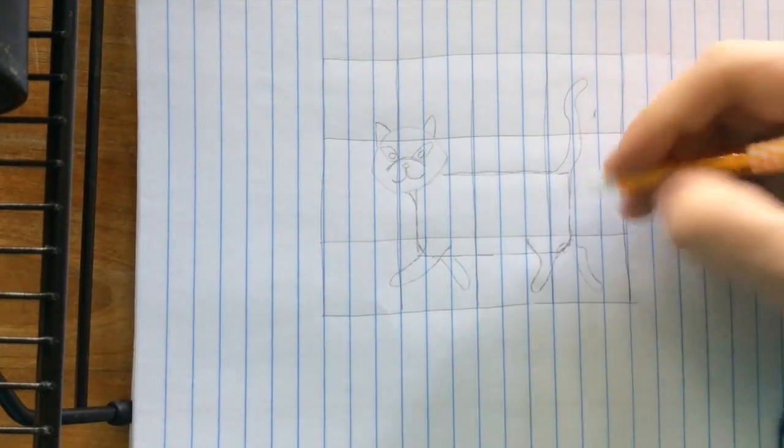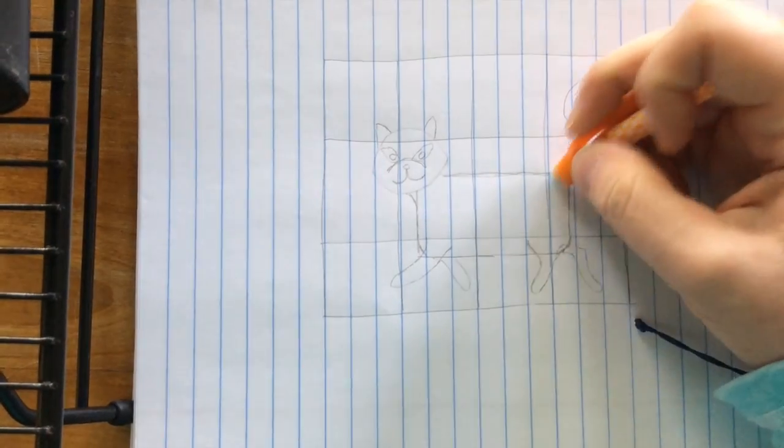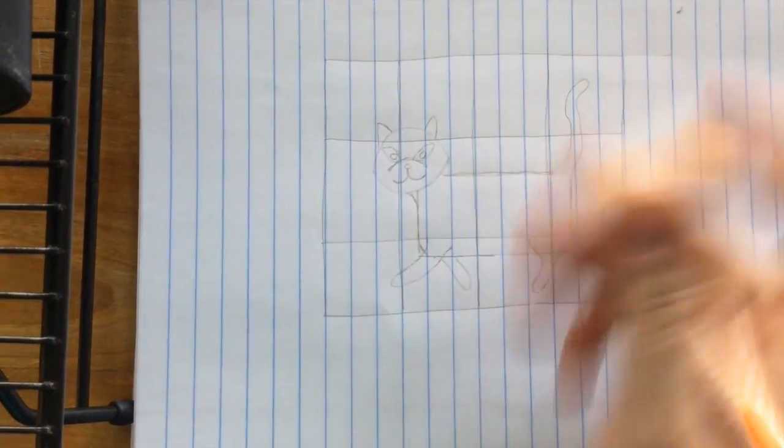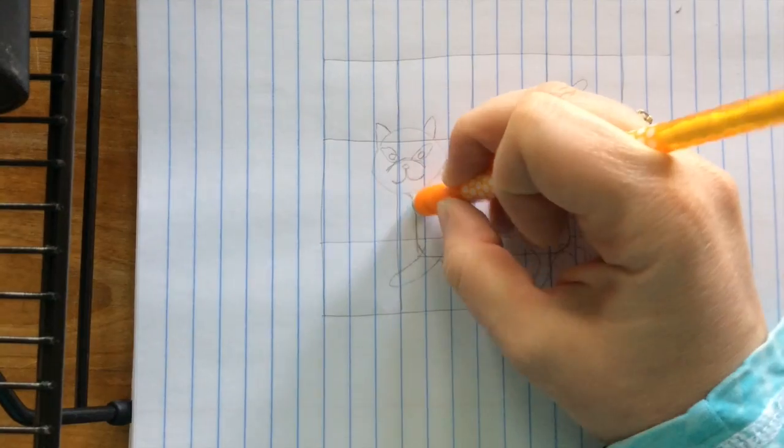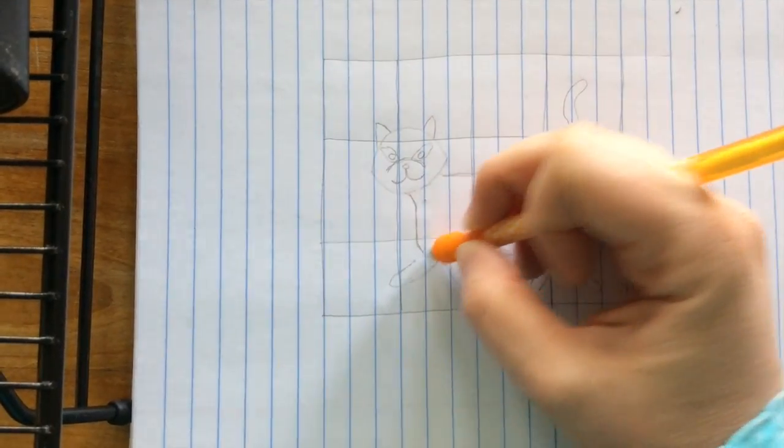Erase places where it looks kind of square. Erase that corner out there. Erase that line there. These corners here.